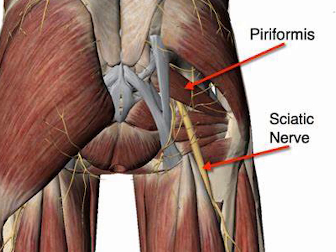At the popliteal fossa, the nerve divides into its two branches.